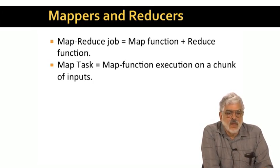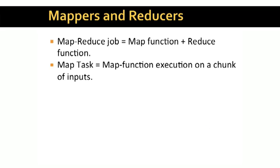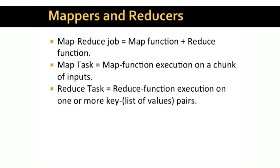A MapTask applies the Map function to each input in a chunk of the input file. And a Reduce task applies the Reduce function to each of a collection of key-value list pairs. Remember that behind the scenes, key-value pairs are organized by key, and the Reduce task is presented with pairs consisting of a key and the list of all the values associated with that key that were generated by any of the MapTasks.